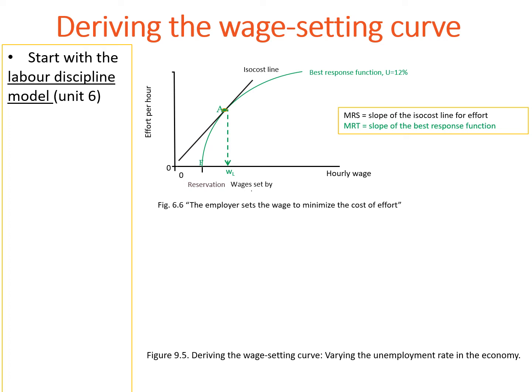This figure also associates the best response function with a given unemployment rate. Employees decide on their effort based on the unemployment rate in the economy. The logic is that a higher unemployment rate reduces the reservation wage, because a worker faces a longer expected period of unemployment if he or she loses a job. So a higher unemployment rate weakens the employee's bargaining power and is associated with a best response function more to the left.